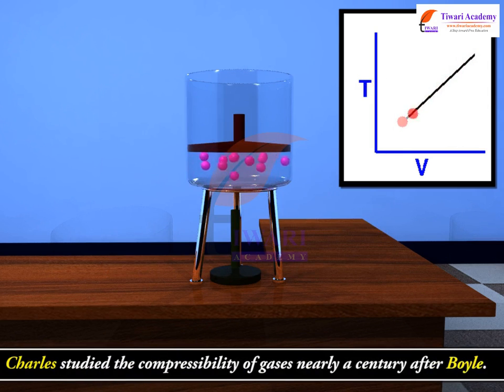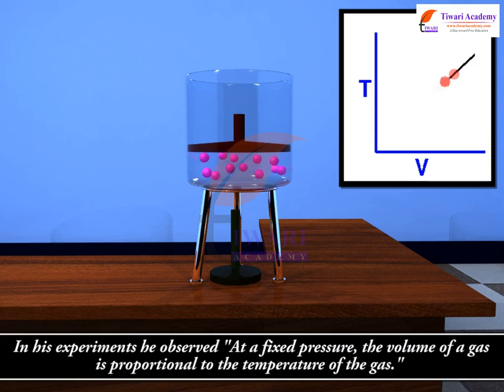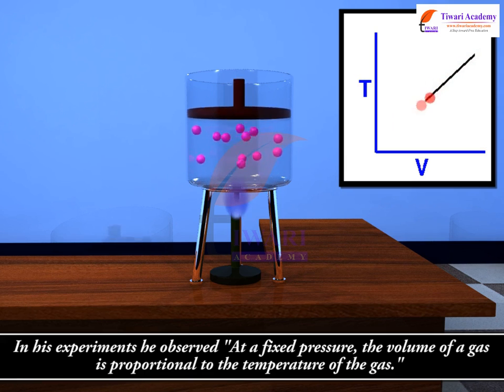Charles studied the compressibility of gases nearly a century after Boyle. In his experiments, he observed at a fixed pressure, the volume of a gas is proportional to the temperature of the gas.